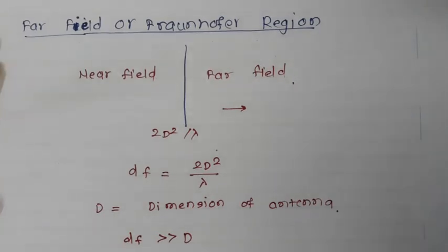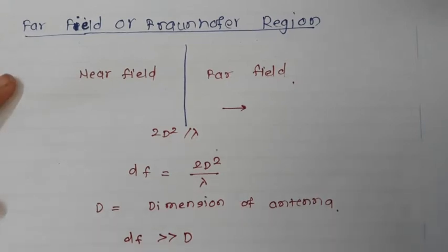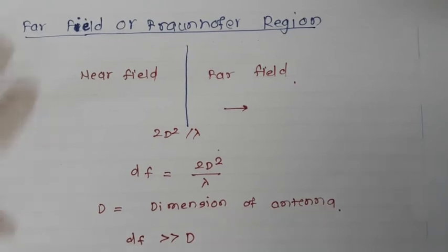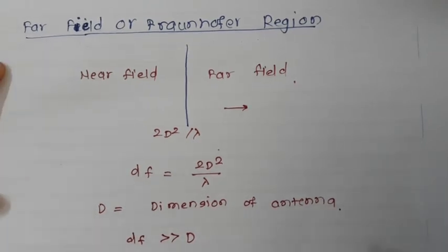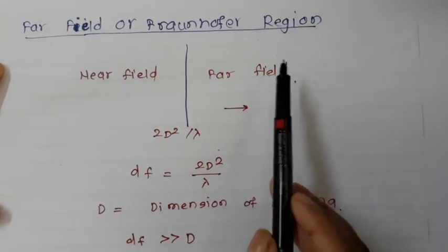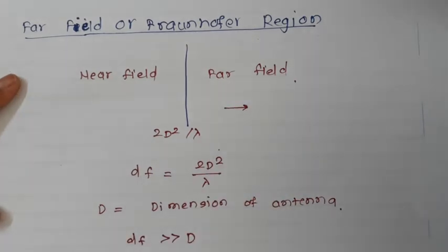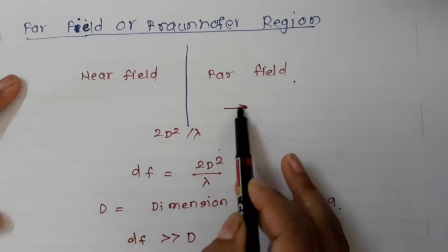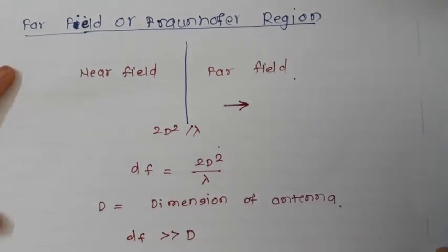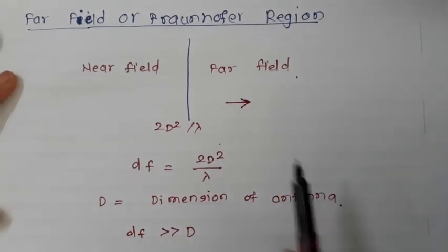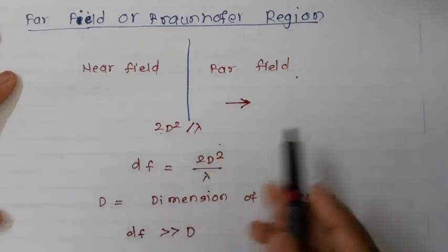In today's session we are going to solve problems based on the Friis free space equation. Whenever we talk about the Friis free space equation, we consider that our region is the far field region. The regions are divided into two fields: the near field region and the far field region. The far field region where we apply the free space equation is the region beyond 2D² / λ.